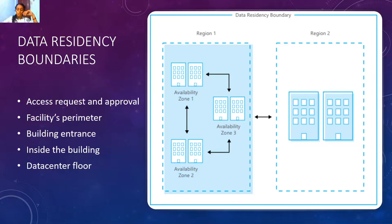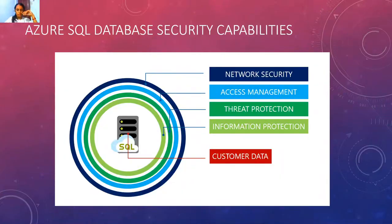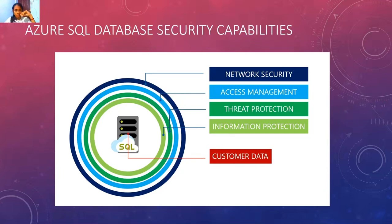Azure SQL Database security capabilities: we discussed encryption in earlier slides. There are four layers — customer data at the center, surrounded by information protection, threat protection, access management, and network security. To reach the customer data, an attacker must pass through all of these layers. This shows how well our data is protected inside Azure SQL Database. For anyone working as a DBA, it's very beneficial to use Azure SQL security capabilities.